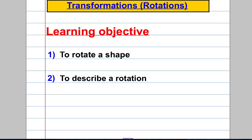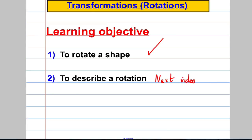What do you need to know? Well, you need to know how to rotate a shape — i.e. perform a rotation on a given shape — and you also need to be able to describe a rotation that has happened. In this video we are going to rotate shapes, and in the next video we are going to describe rotations. Check that out if you want to describe rotations. Both of these are required for GCSE.